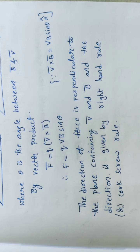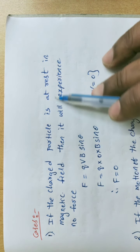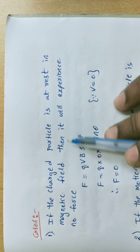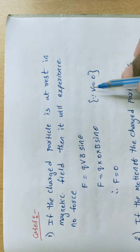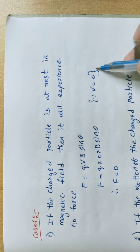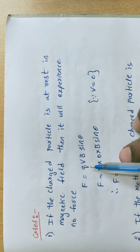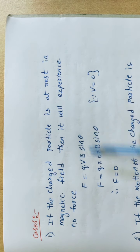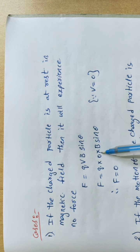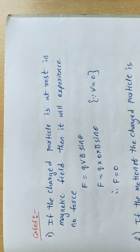Case 1: If the charged particle is at rest in the magnetic field, it experiences no force. Rest means V = 0. Using the formula F = QVB sinθ, we get F = Q × 0 × B × sinθ = 0. So when the charged particle is at rest, the force on it is zero.